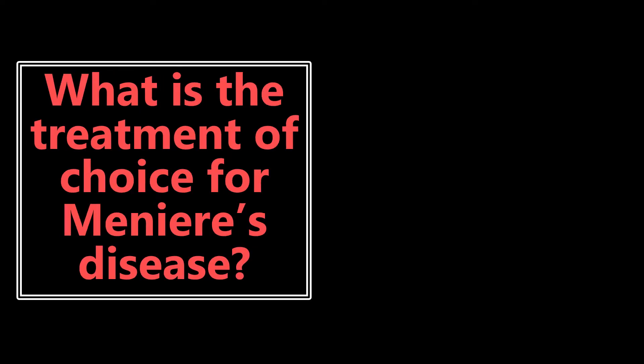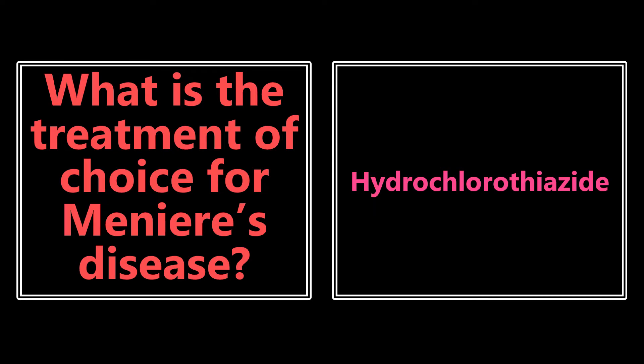What is the treatment of choice for Meniere's disease? The treatment is hydrochlorothiazide. Remember the triad for Meniere's disease: vertigo, tinnitus, and sensorineural hearing loss. The reason we use hydrochlorothiazide is that it can promote excretion of inner ear fluid, which may improve symptoms. Other diuretics can be used as well, but the most common one is hydrochlorothiazide.